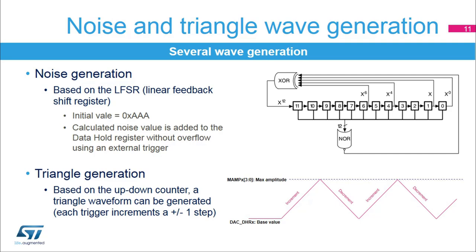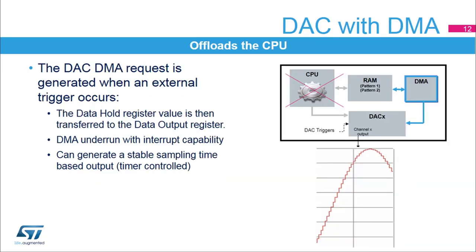The up-down counter with a programmable count value can create triangle wave data which can update the DAC output data. The data can also be updated by a trigger signal, and the DAC can also create DMA requests from the trigger signal.